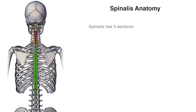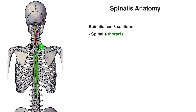The spinalis is comprised of three different sections and each section has a different name used to describe it. The section highlighted in green here is the spinalis thoracis section, the section highlighted in purple is the spinalis cervicis section, and the section highlighted in yellow is the spinalis capitis.